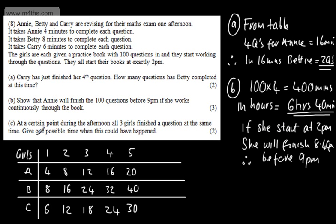It says now in part C for two marks, at a certain point during the afternoon all three girls finish a question at the same time. Give one possible time when this could have happened. So if we look here, we can go to our table. We've got lots of different choices with this. I'm just going to fill out one more.